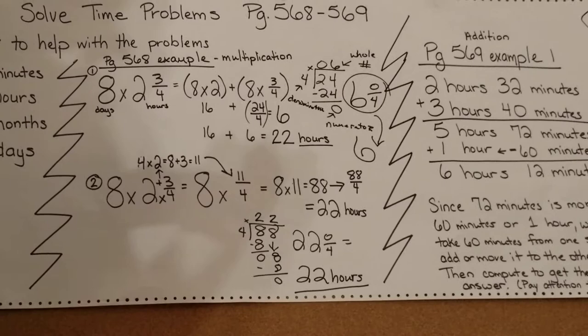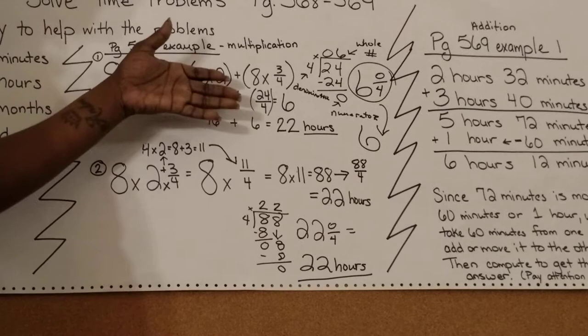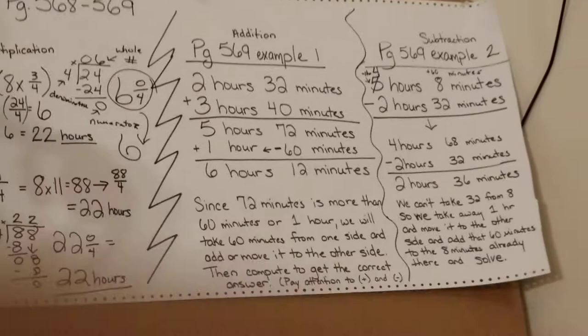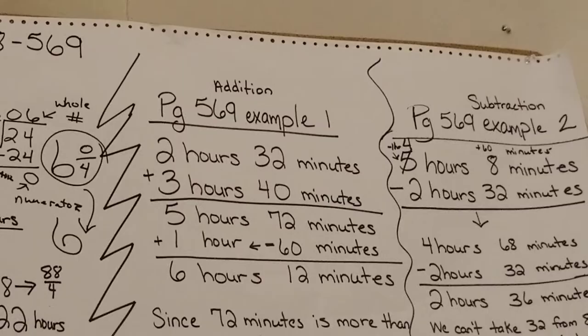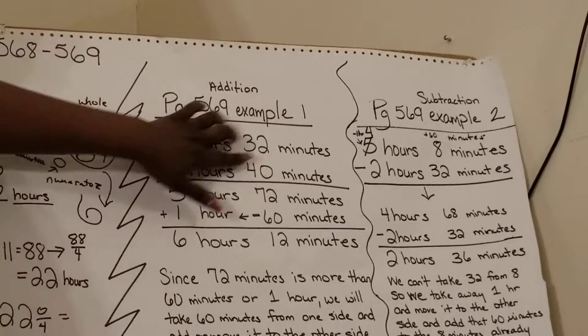We just covered solving time problems using multiplication. Now I'm going to do an example which is on page 569 to show you addition. The problem on page 569 was 2 hours 32 minutes plus 3 hours 40 minutes. I went ahead and did the problem and came up with 2 plus 3 is 5, and 32 plus 40 is 72. I came up with 5 hours and 72 minutes.